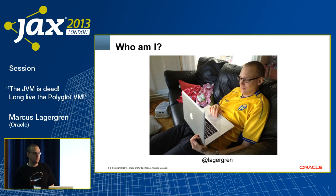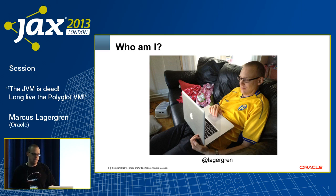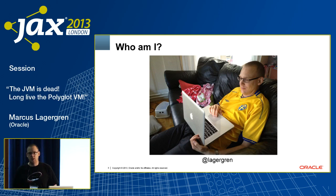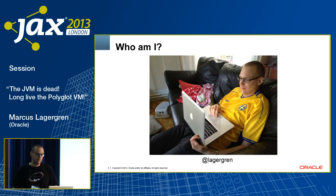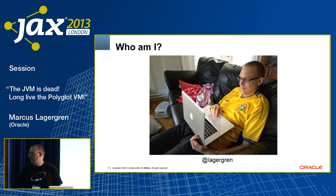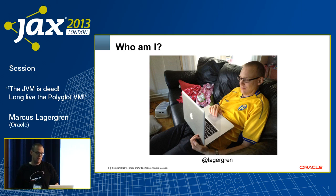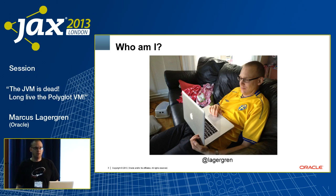We do things like Java 8. We incorporate lambdas in the Java language. We work a lot with dynamic languages on the JVM, which is what I've been doing for the last almost two years. I've been involved in the Nashorn project, which is deploying JavaScript on the JVM and trying to do it as efficiently as possible. I'm based in Stockholm, which is one of the three major JVM engineering campuses Oracle has.